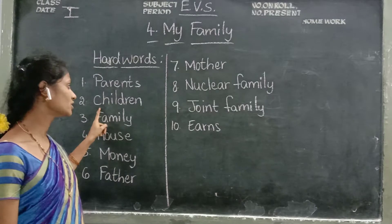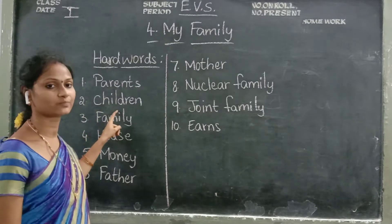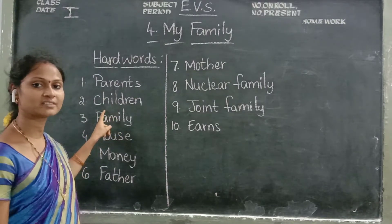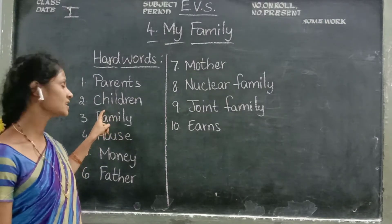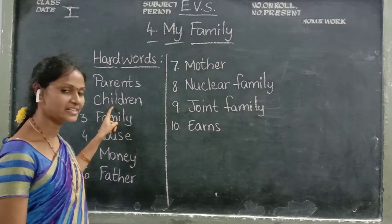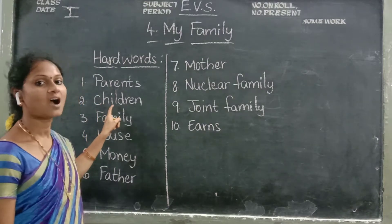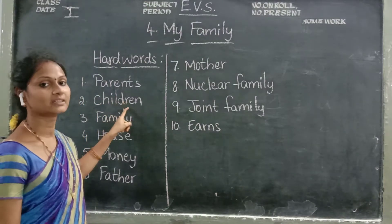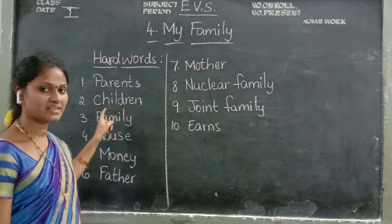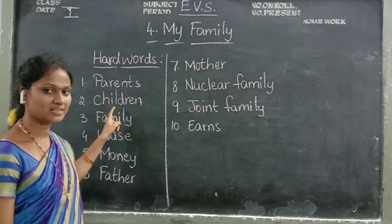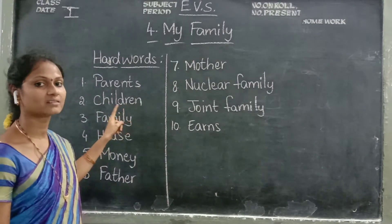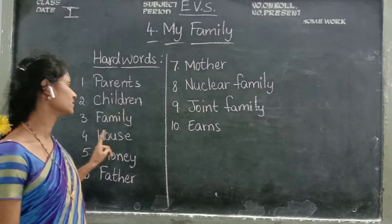Now the second one: children. What is the spelling of children? C-H-I-L-D-R-E-N. Children. C-H-I-L-D-R-E-N. Children.